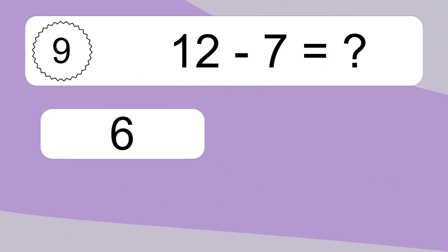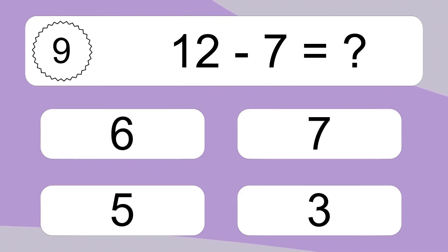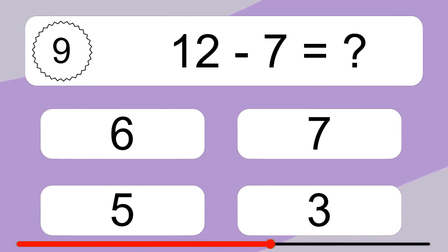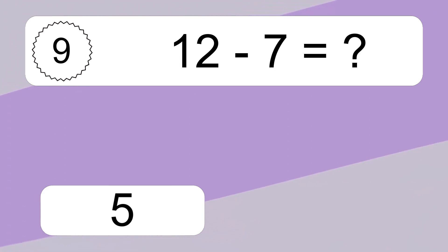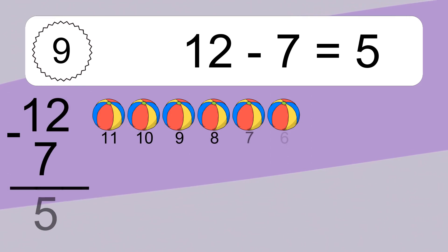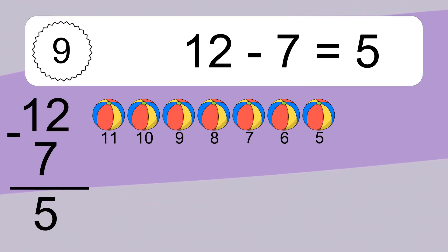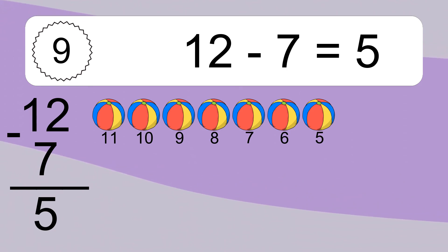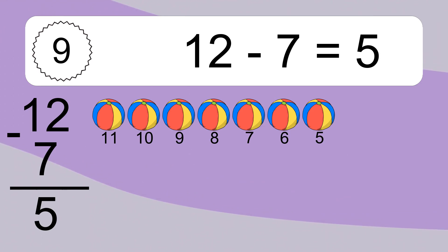12 minus 7 equals what? 12 minus 7 equals 5. Let's count it. 11, 10, 9, 8, 7, 6, 5.